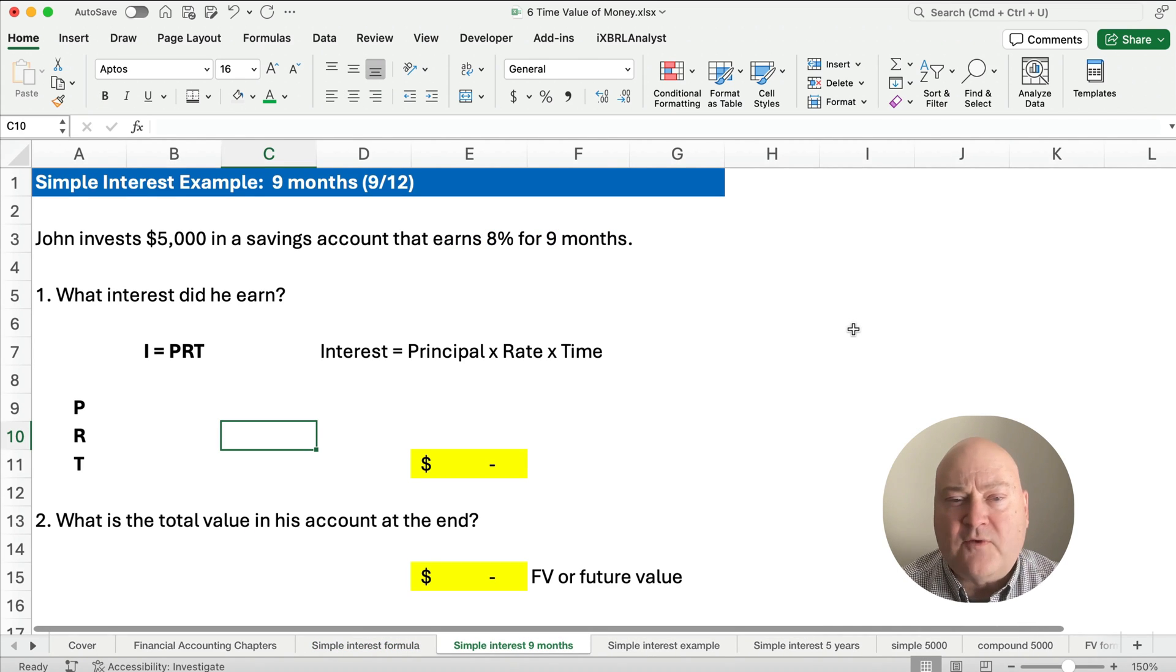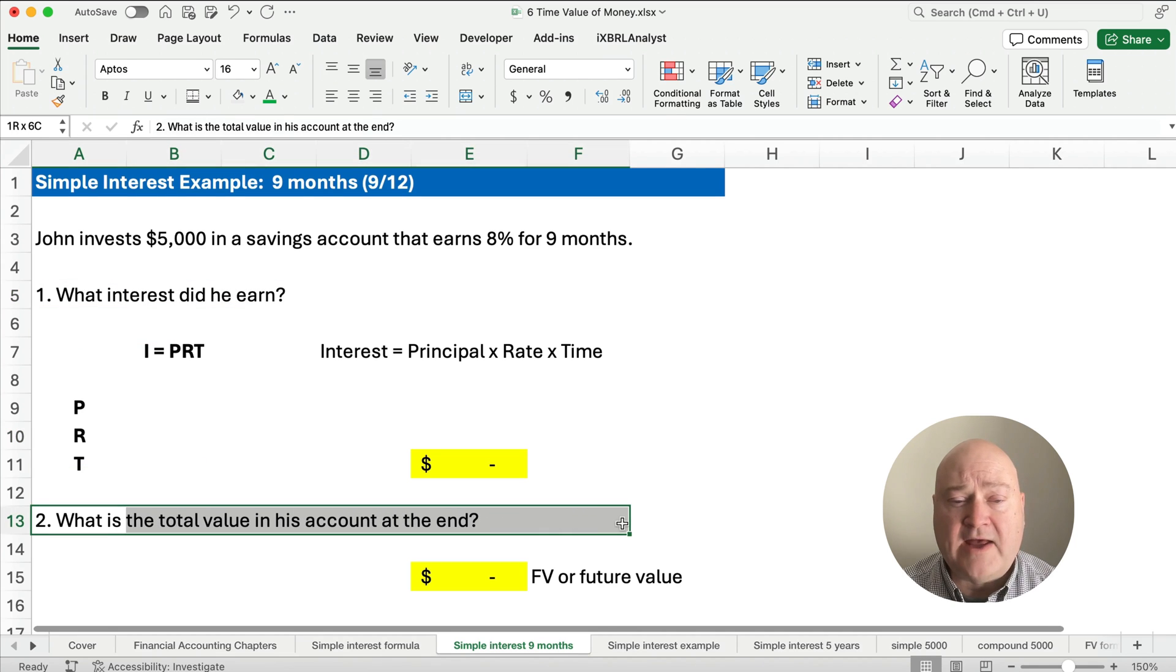This one is for nine months, a partial year. So we're going to have to use a fraction for the time rather than a whole number. John invests $5,000 in an account that earns 8% for nine months. We're going to ask two questions: What interest did he earn? And what's the total value of the account at the end?